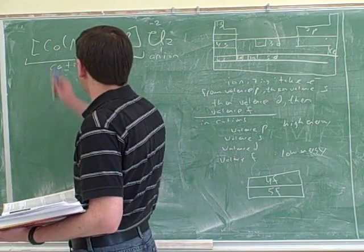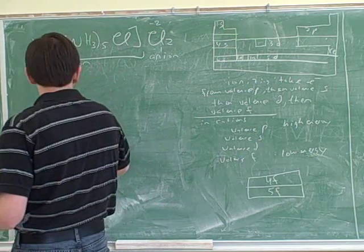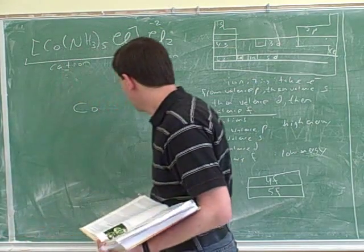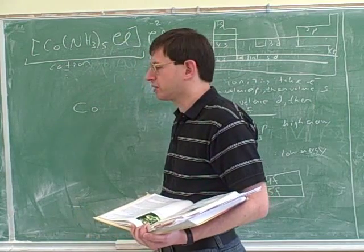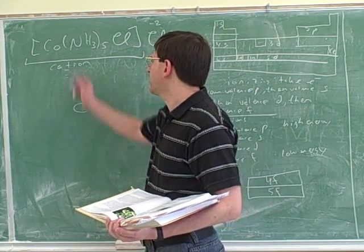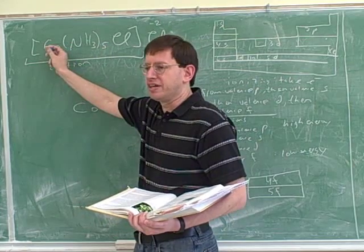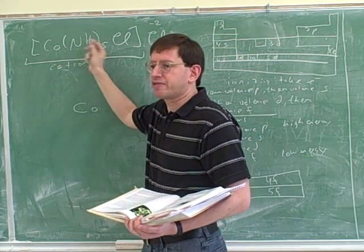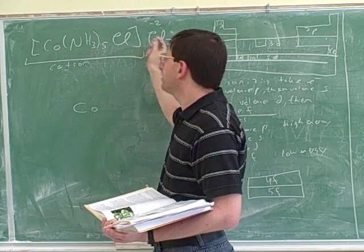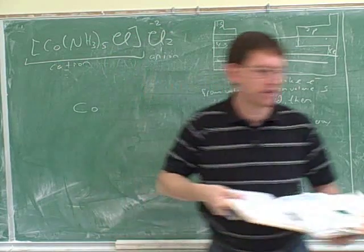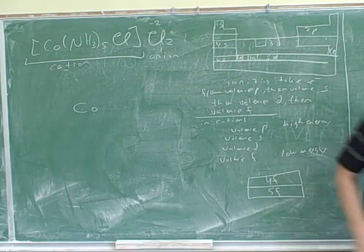So now let's think about what's happening here with this cobalt. Well, there's different ways to form cobalt. One way to think about this is that these species are covalently bonded to the cobalt. So inside the brackets we have covalent bonds, and between these two things we have ionic bonds. Well, there's two different ways to form covalent bonds.